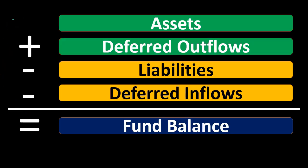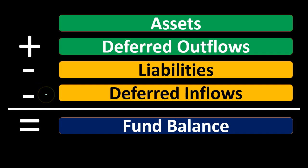Now, our accounting equation: you'll recall assets equal liabilities plus equity, which we convert to assets minus liabilities equals equity. We then add deferred outflows and deferred inflows to the equation. Assets plus deferred outflows — items that increase fund balance as assets do but don't qualify specifically as assets — minus liabilities, minus deferred inflows — which decrease fund balance similarly to liabilities but can't be categorized as such — equals the fund balance, which you can think of as the equity section.